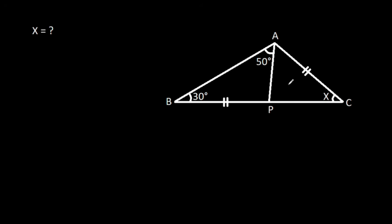In this video, we have been given that AC is equal to BP, angle ABC is 30 degrees, angle BAP is 50 degrees, and angle ACB is X. We have to find X.